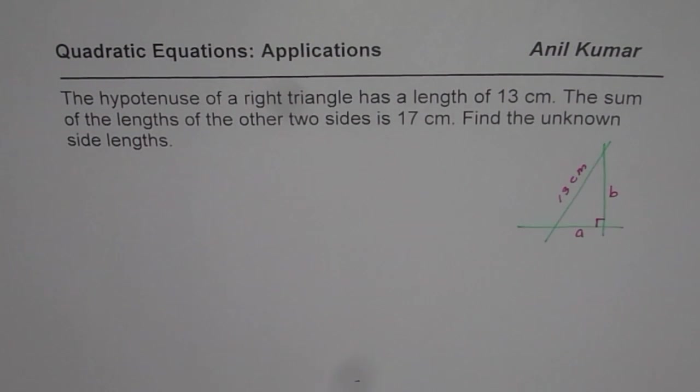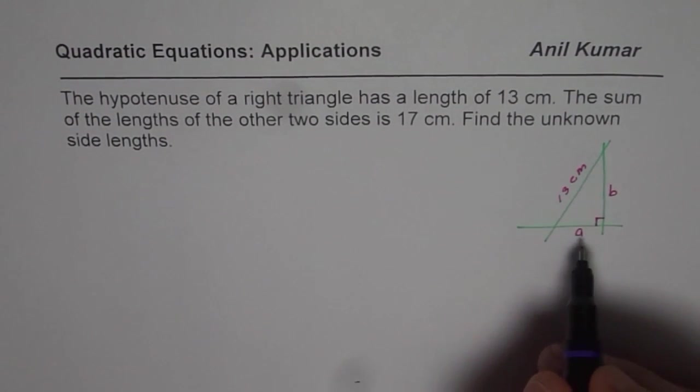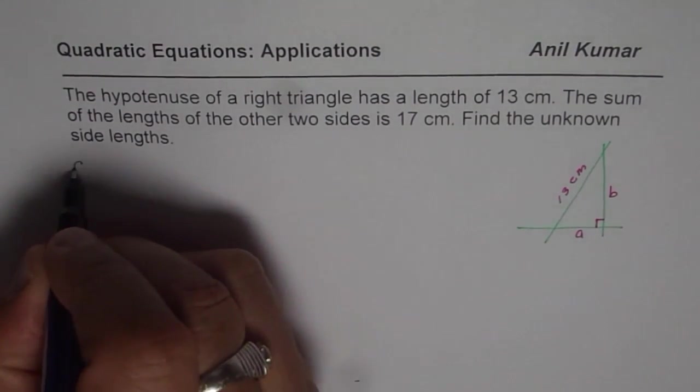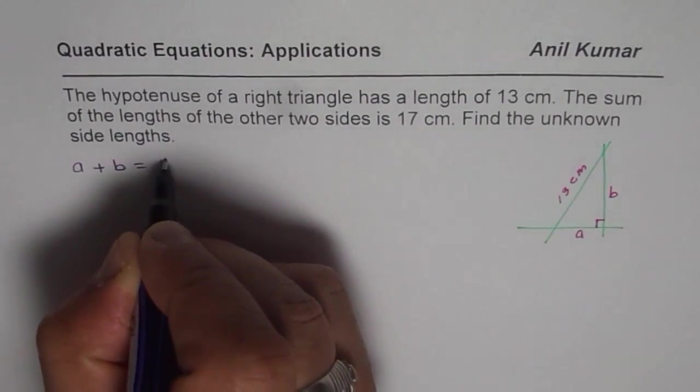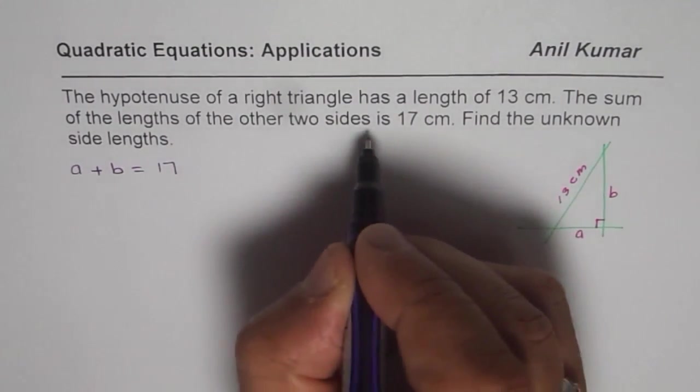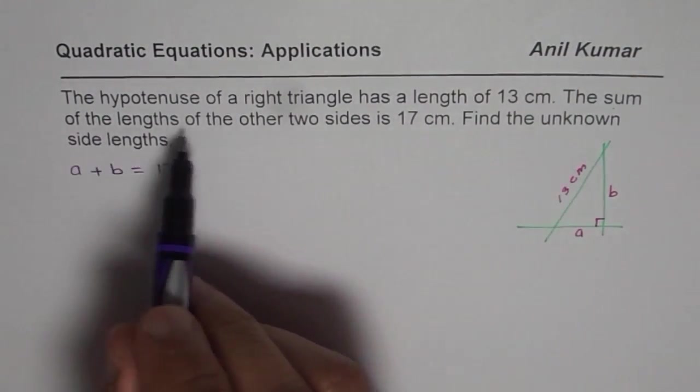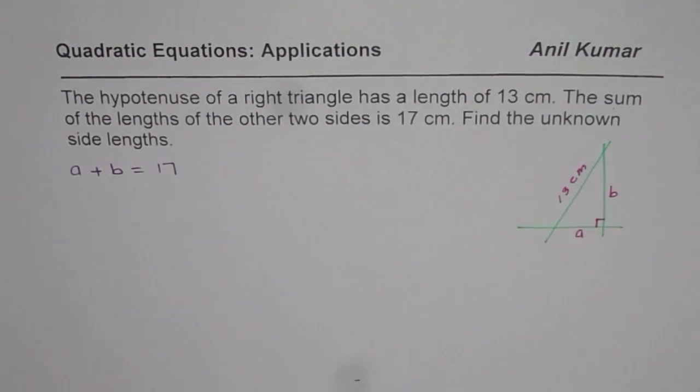Now, we have already defined our variables. That is, let the two sides be A and B. Now what we know about these sides is that A plus B is 17, since we are given that the sum of the lengths of the other two sides is 17.